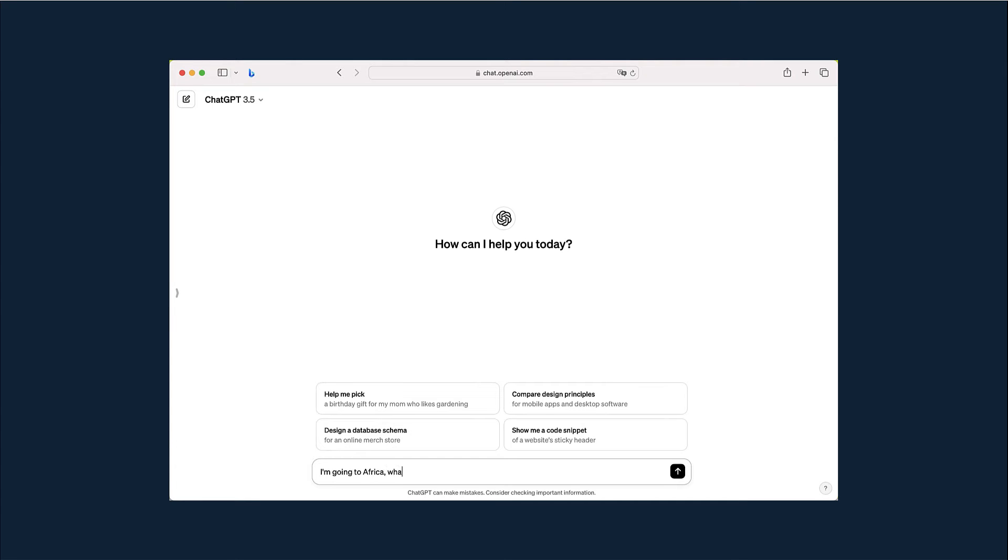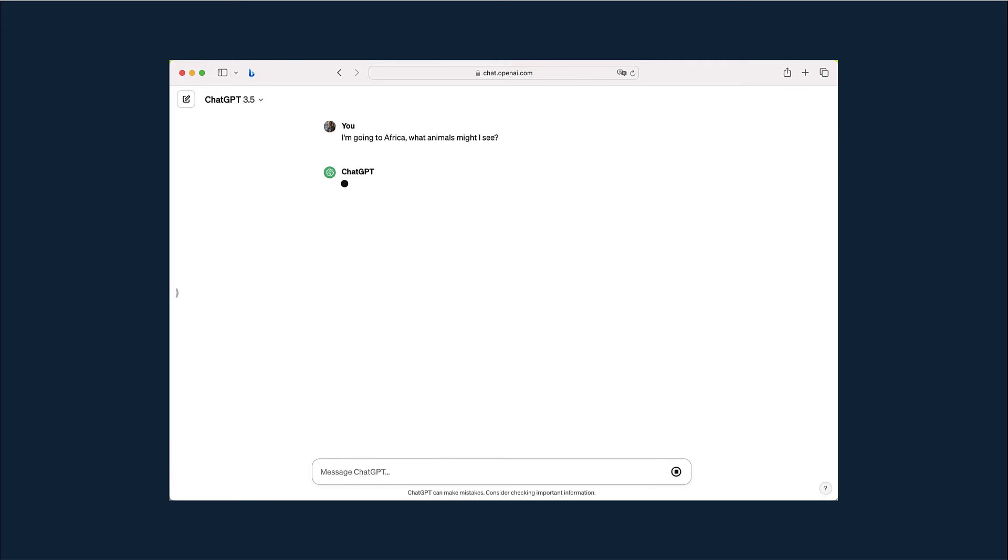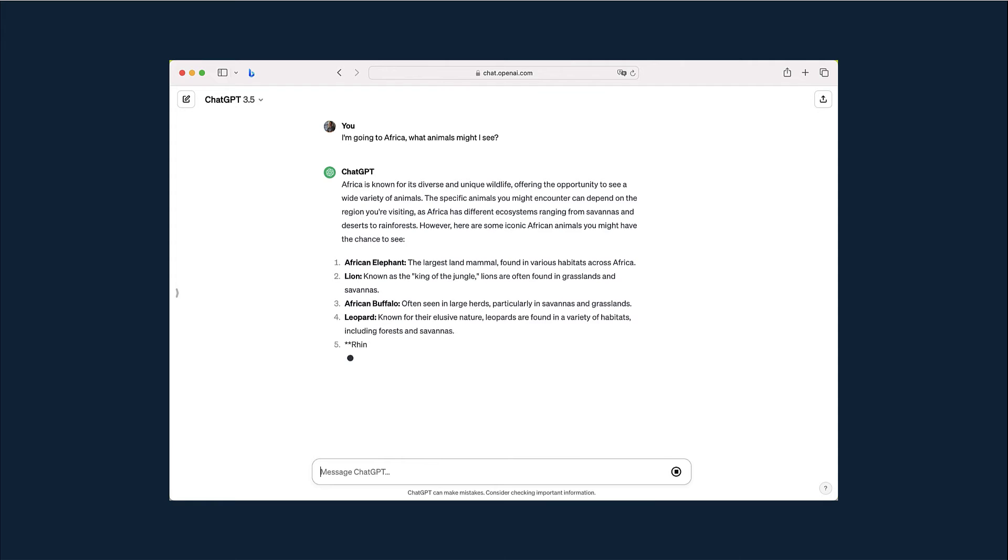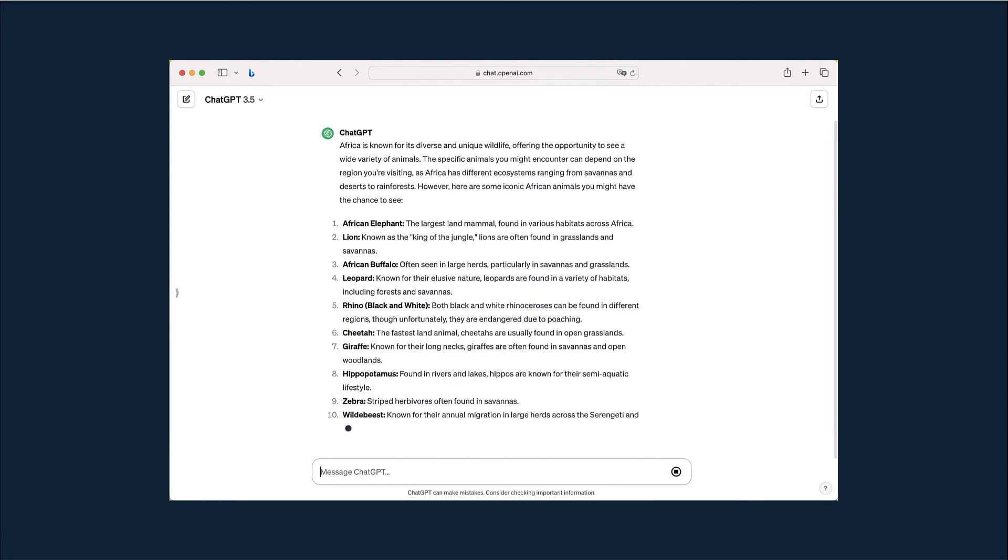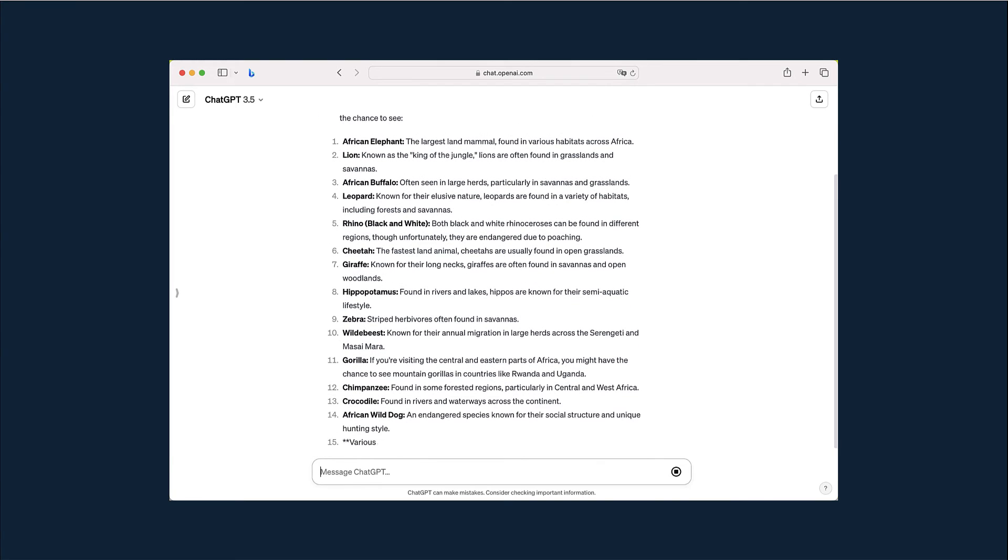So I'm going to Africa. What animals might I see? As expected, actually, it did give me a nice preamble saying that Africa is known for its diverse wildlife, but it then goes on to say you would see an African lion, an African elephant, a lion, a buffalo, a leopard, a rhino, a cheetah.